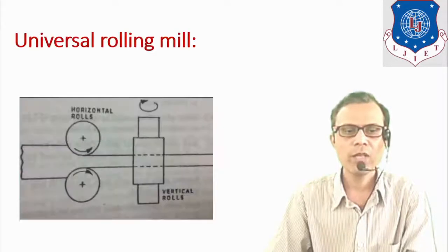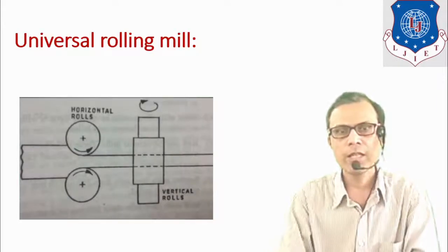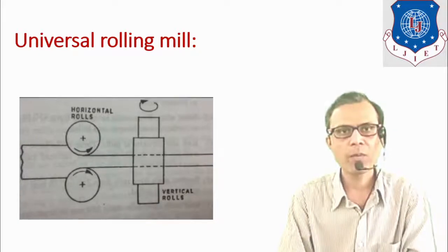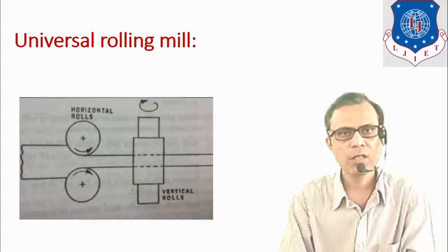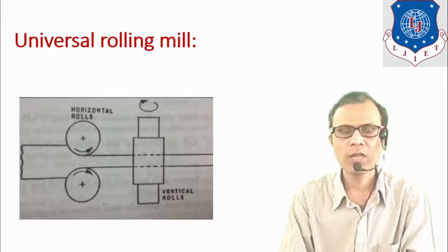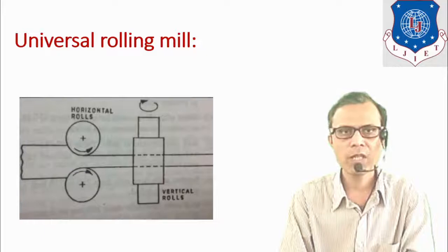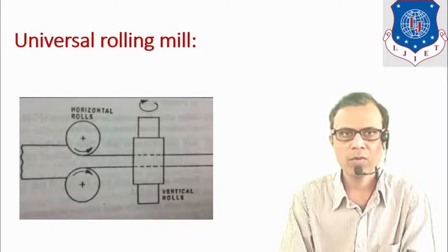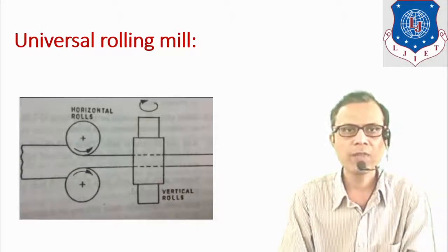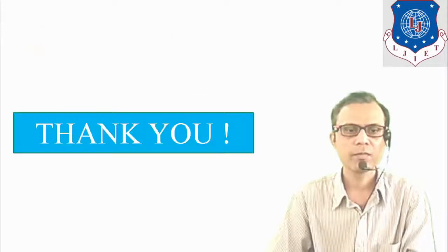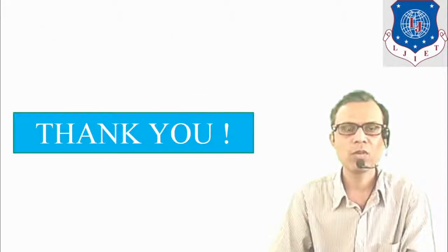In summary, we have seen the detailed classification of metal forming processes, the basic concept of metal forming, Hooke's law and stress-strain diagram, hot working and cold working processes, their comparison, and different types of rolling mills. Thank you for watching.